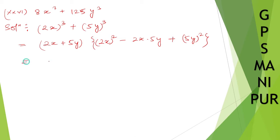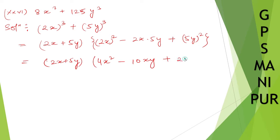Now write it down as it is and open the small bracket. 2x squared is 4x squared, minus 2x times 5y gives 10xy, plus 5y squared is 25y squared. So the answer is (2x + 5y)(4x² − 10xy + 25y²).